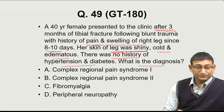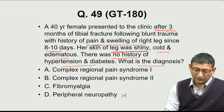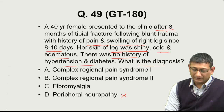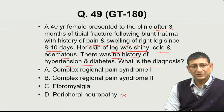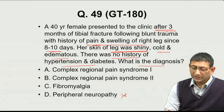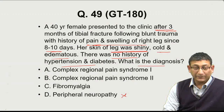She has no history of diabetes, so she cannot have peripheral neuropathy. The lower and upper limbs are prone to a disorder of the nervous system called complex regional pain syndrome. In CRPS type 1, there is no damage to the nerves, whereas in type 2, there is nerve damage.